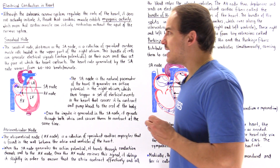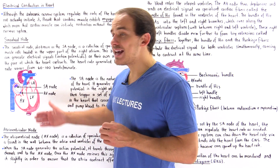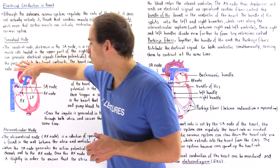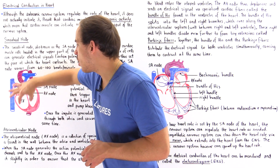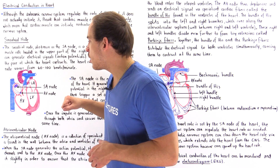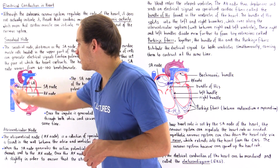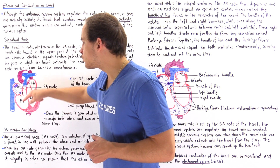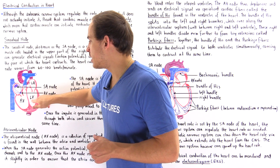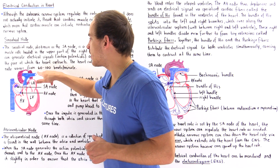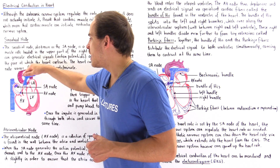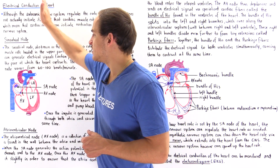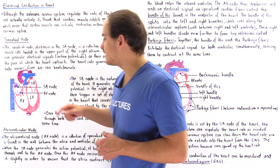Let's begin by taking a look at a cross-section of the heart. We have the right side and left side of the heart, the superior and inferior vena cava, the right atrium, the right ventricle, the left atrium, the left ventricle, the pulmonary arteries extending into the lungs, and our aorta that splits into the ascending and descending aorta.